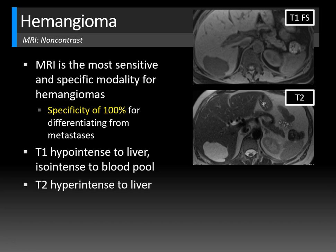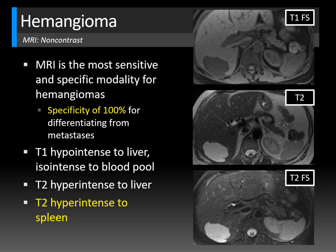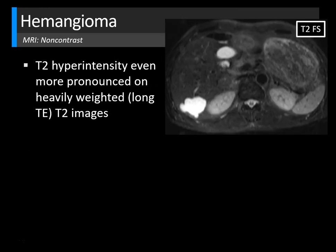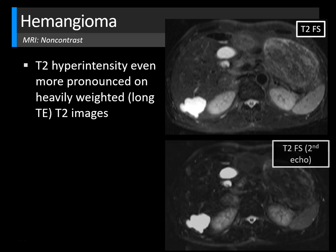On T2-weighted images, hemangiomas have a very characteristic appearance — they are hyperintense to the liver parenchyma and, more importantly, hyperintense to the spleen, which is a very classic feature for a typical hemangioma. This hyperintensity is often pronounced on T2 fat-suppressed images. It's also fairly common for hemangiomas to have a slightly lobulated contour. The T2 hyperintensity becomes even more pronounced on heavily T2-weighted images with a longer TE, which is characteristic for hemangiomas.